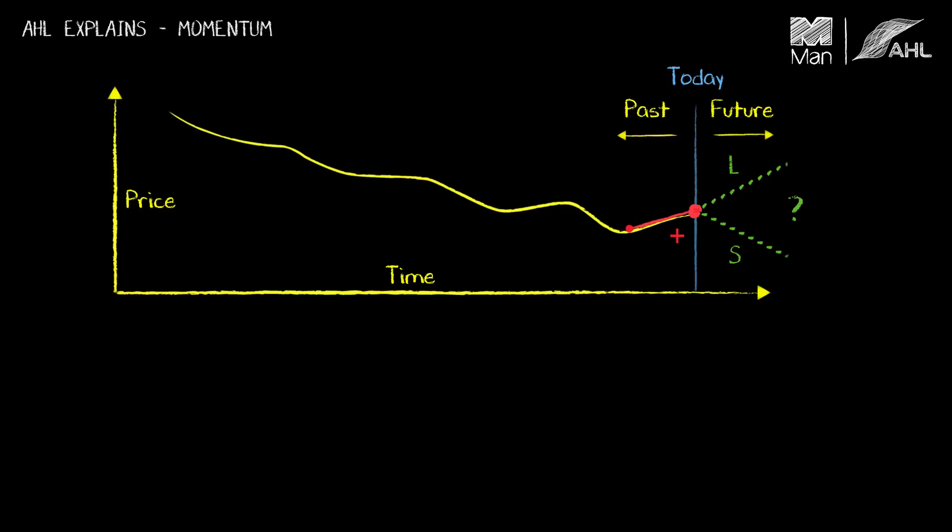Similarly, if I was to step back to two weeks ago and look at what the momentum has been over that two week horizon, I can do that by joining up the price two weeks ago to the price today, and that will give me a negative sloping line. So I put a negative there.